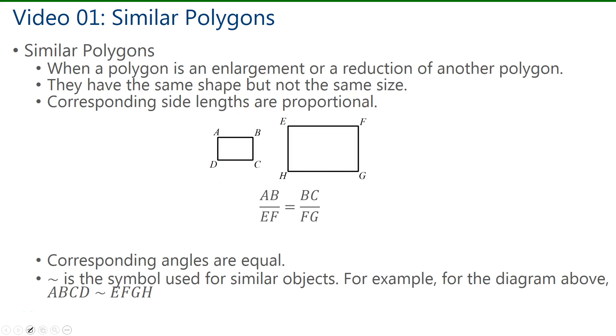Now when we have two similar polygons, then they'll have the same shape but not the same size. And since they're similar, corresponding side lengths are proportional. So here we have two similar polygons, both rectangles. So if I take side length AB and divide that by the corresponding side length EF, that should be equal to side length BC divided by FG.